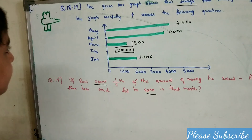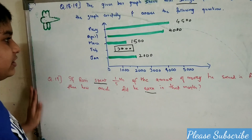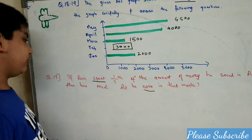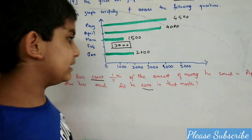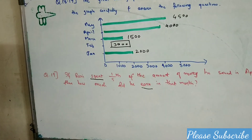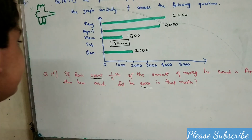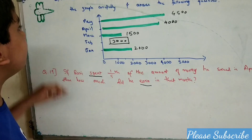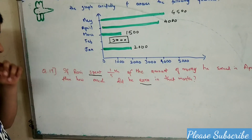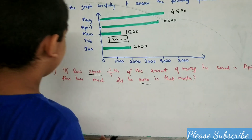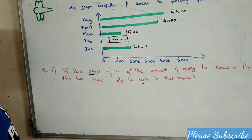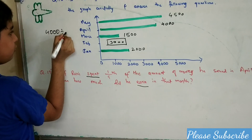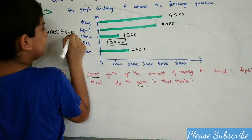Question number 19 uses the same graph as question 18. If Ravi spent 1,500 of the amount he saved in April, then how much did he earn in that month? He saved 4,000 in April. We will divide 4,000 by 5, so my answer is 800.